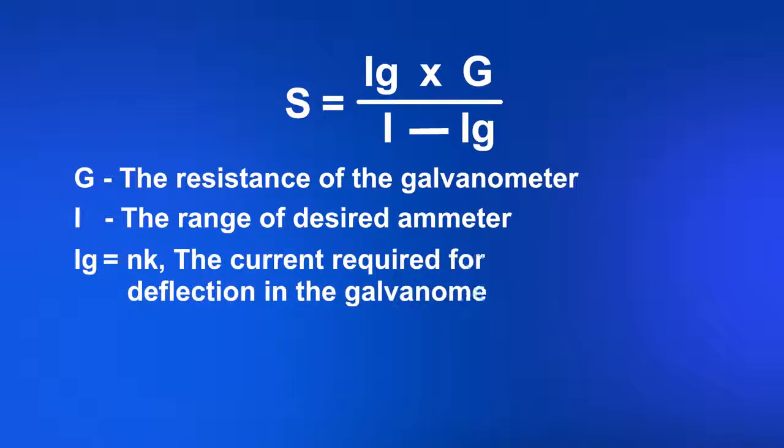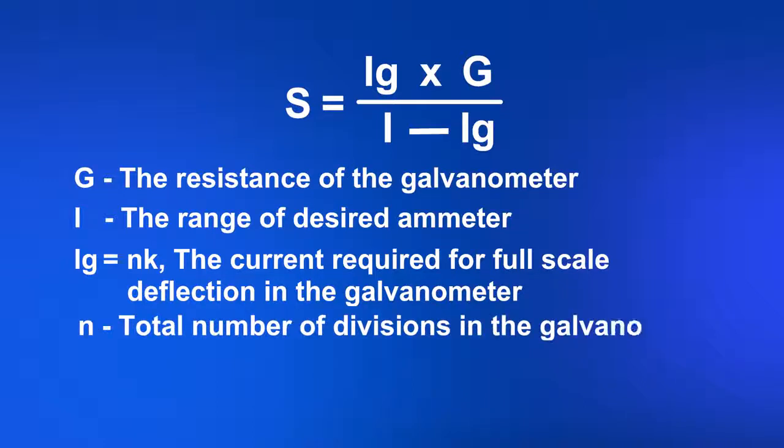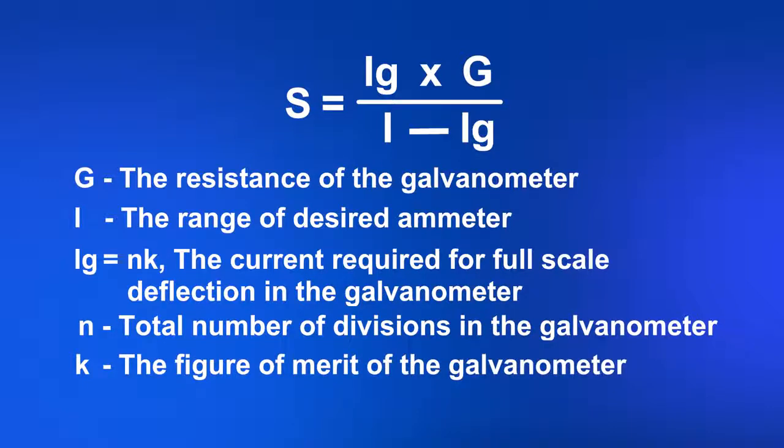the current required for full scale deflection in the galvanometer, where N is the total number of divisions in the galvanometer and K is the figure of merit of the galvanometer.